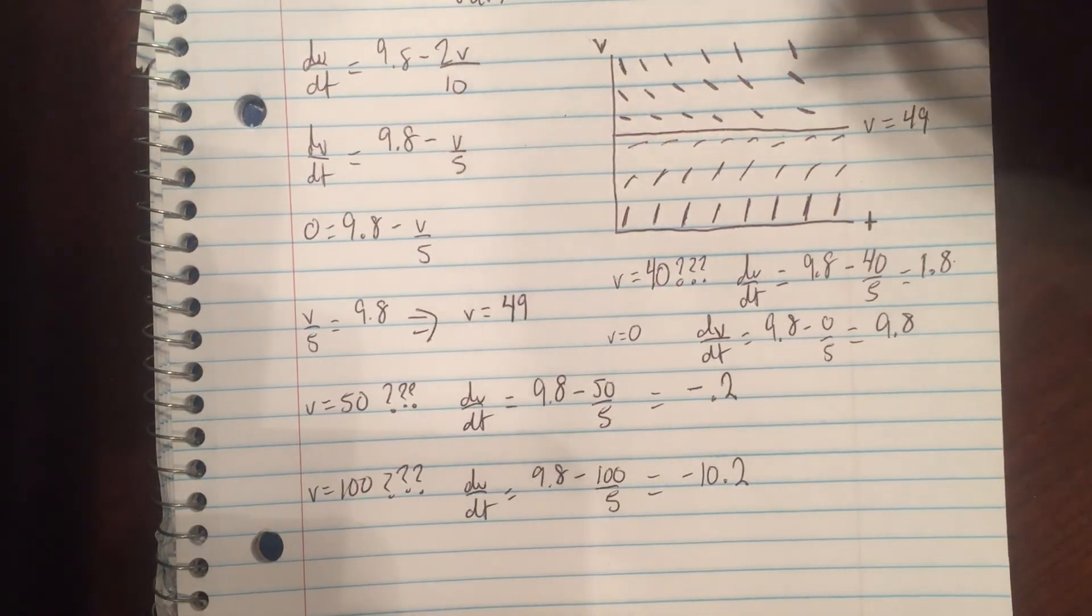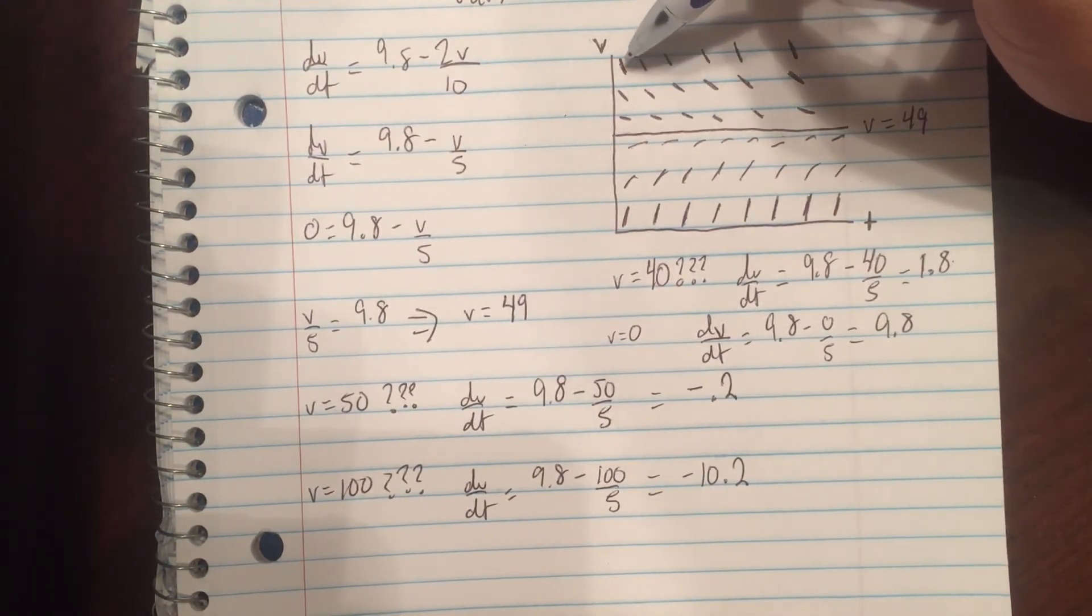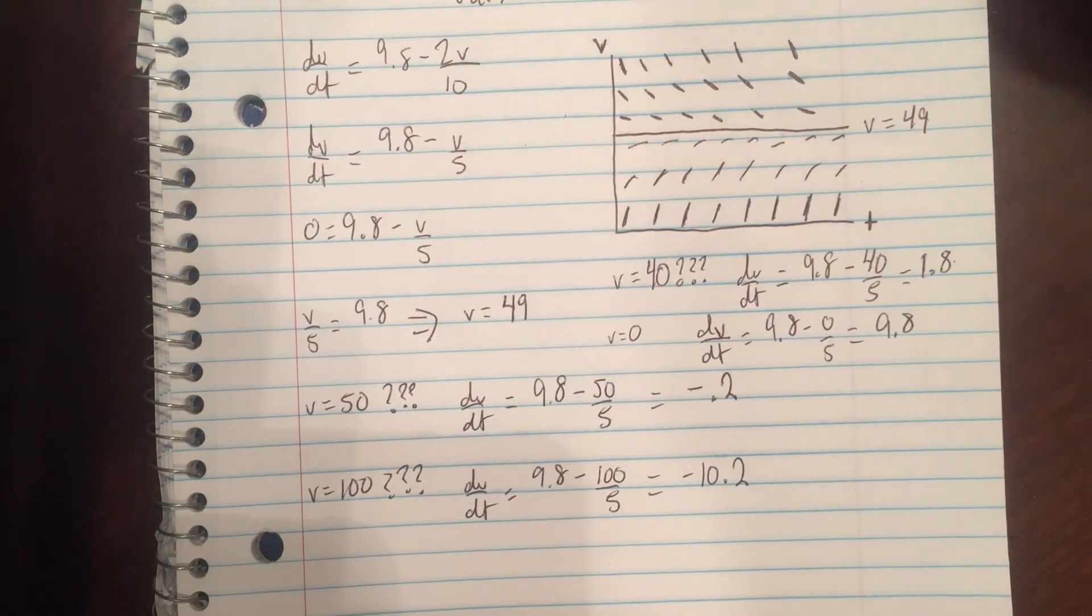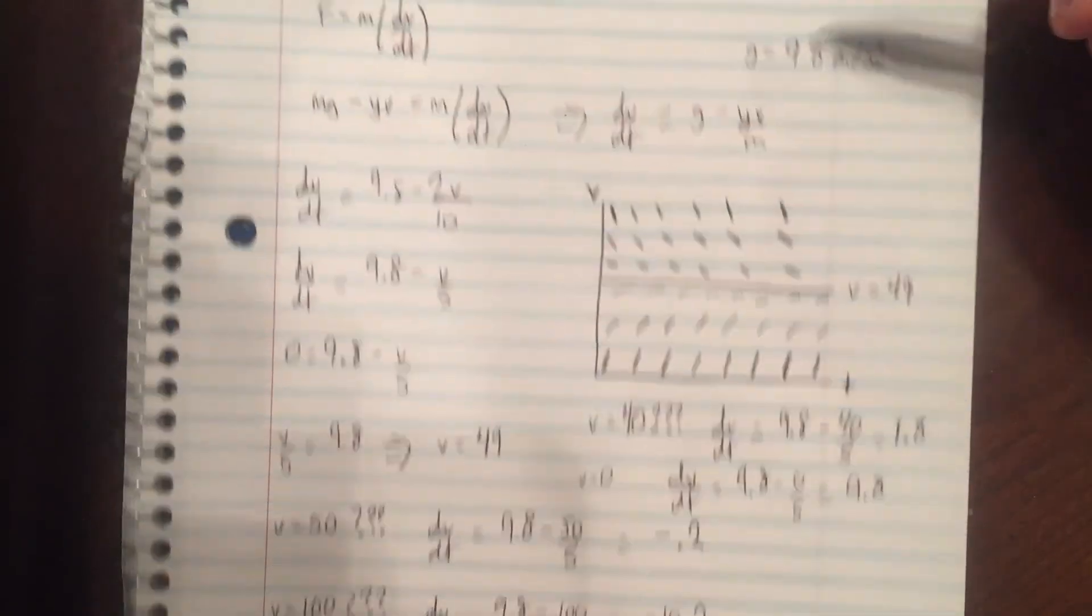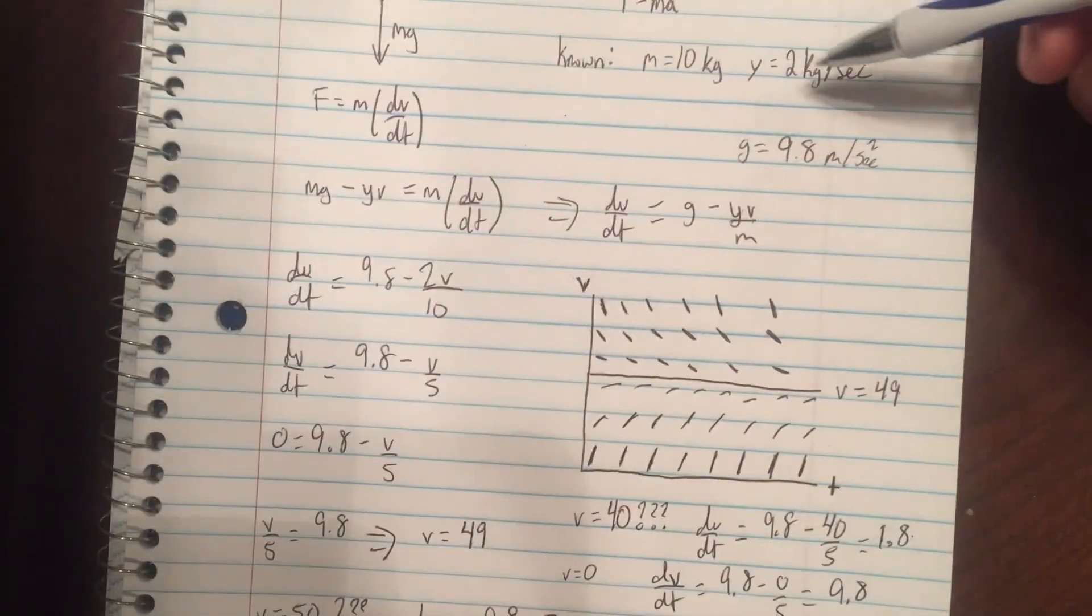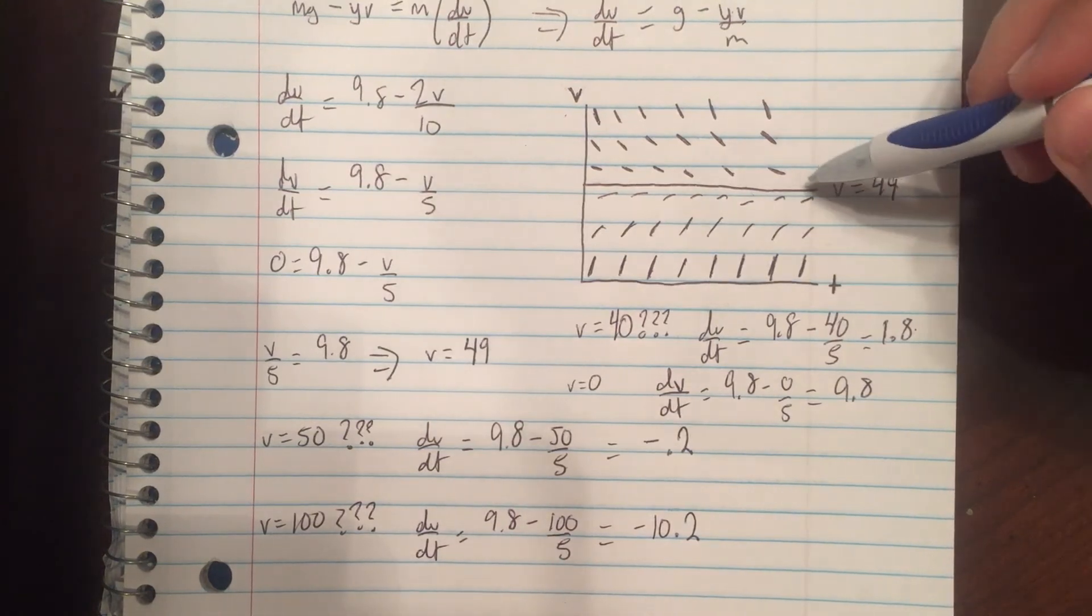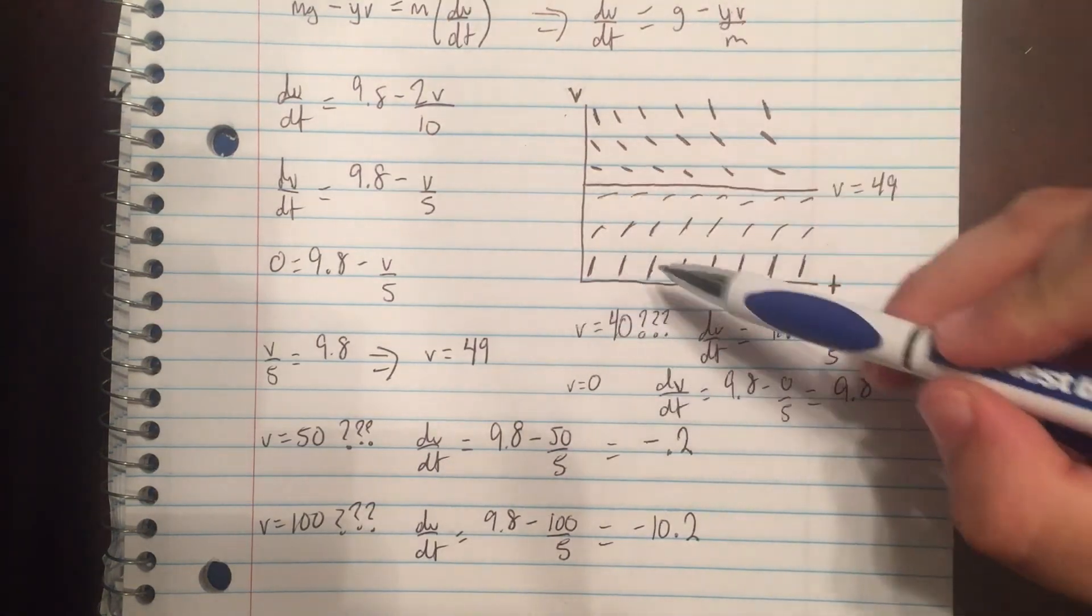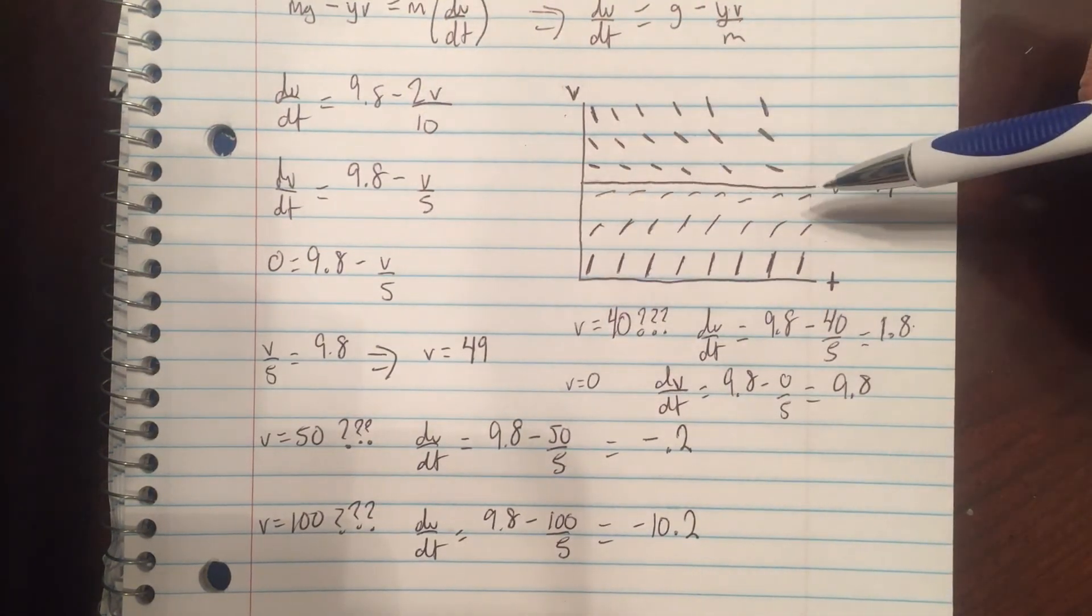What this means is all values of v are eventually going to hit 49, so that's going to be 49 meters per second based off of all of these stated units. We can say that this is actually a stable solution or an equilibrium solution because both sides go to this value.